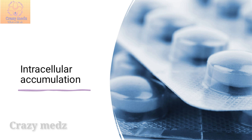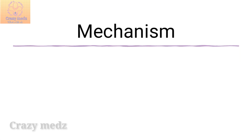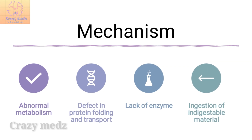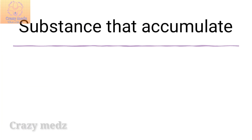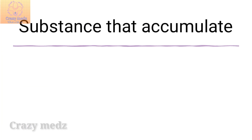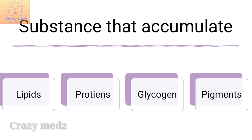Intracellular accumulation is one of the manifestations of metabolic derangement in cells that may be harmless or associated with varying degrees of injury. There are four main pathways of abnormal intracellular accumulation: abnormal metabolism, defect in protein folding and transport, lack of enzyme, and ingestion of indigestible material. The major substances that accumulate in cells are lipids, proteins, glycogen, and pigments.